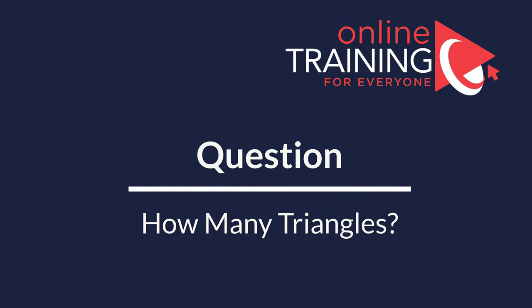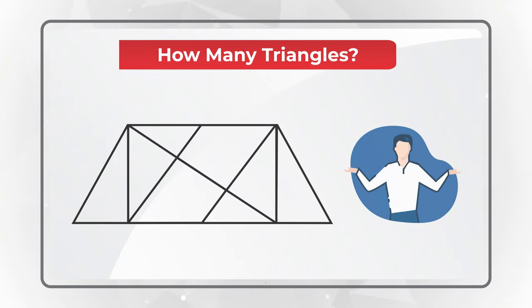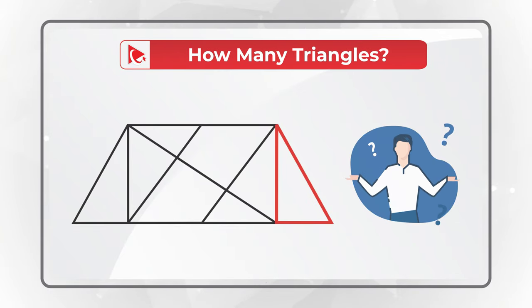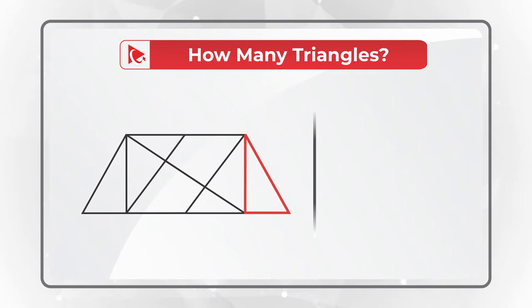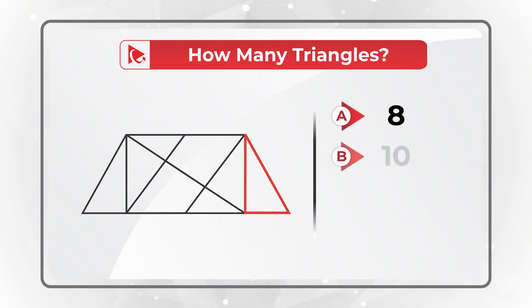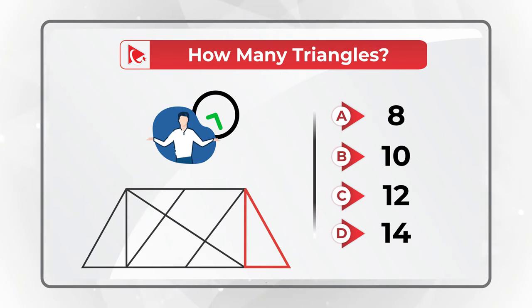When I saw this question, I couldn't believe the answer. You need to determine how many triangles are presented in a given shape. You see one triangle highlighted in red. But you have four different choices: Choice A, 8 triangles. Choice B, 10 triangles. Choice C, 12 triangles. Or choice D, 14 triangles. How many do you see?